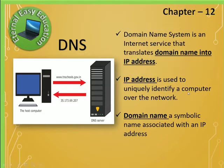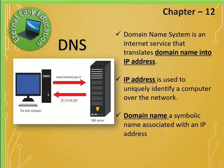An IP address is used to uniquely identify a computer over the network. Since a network is a collection of computers, the IP address identifies each computer in that network. A domain name is a symbolic name associated with an IP address. Because the numerical IP address is very difficult for users to remember, the Domain Name System gives a readable name to each IP address.